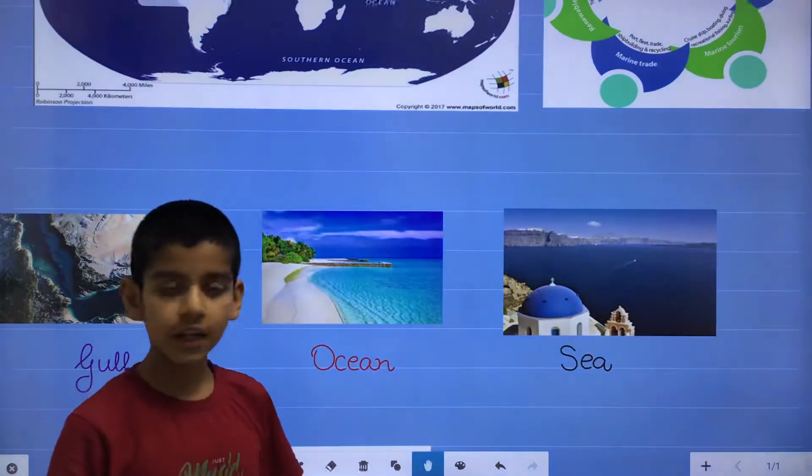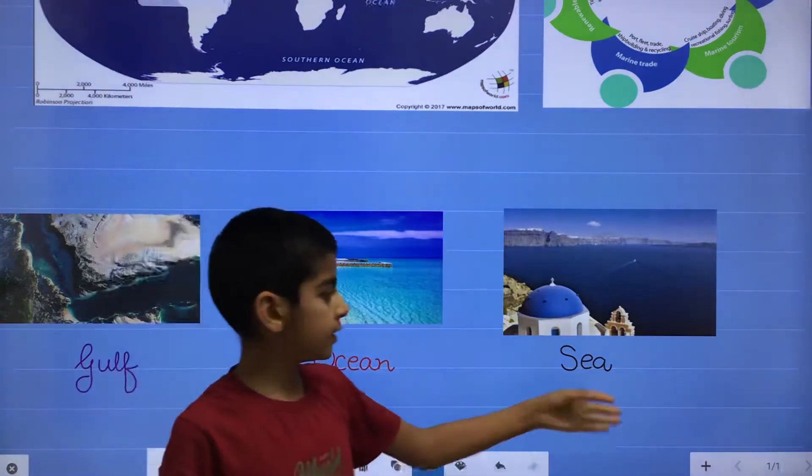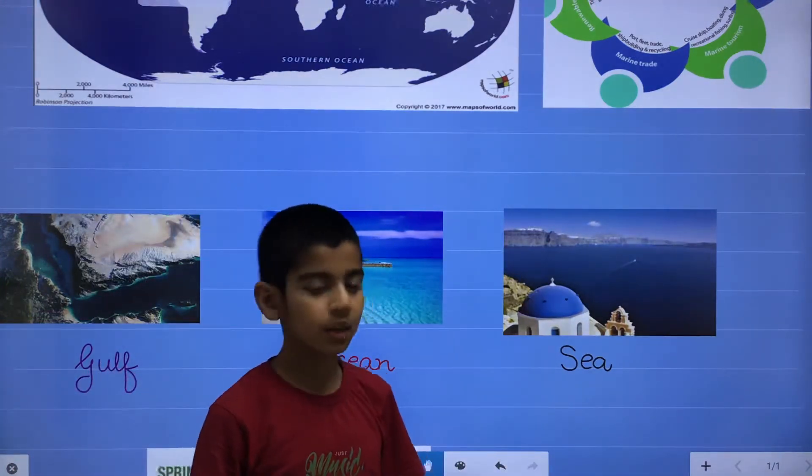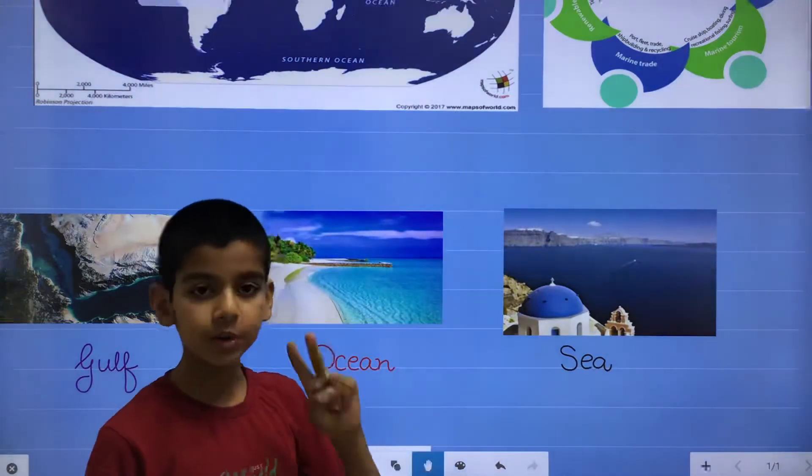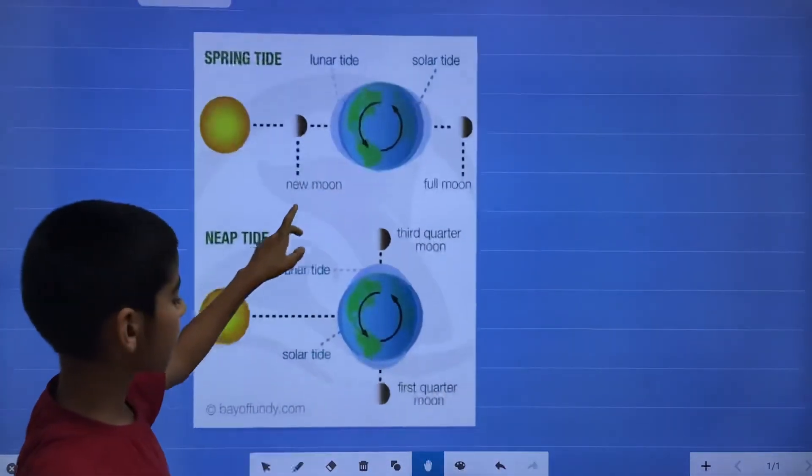Ocean is the largest water boundary, water body. And sea is surrounded by land from two sides.